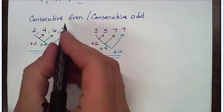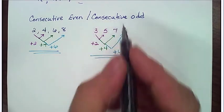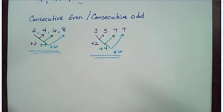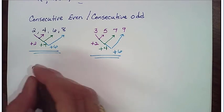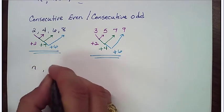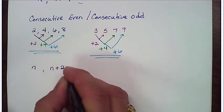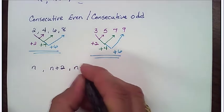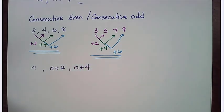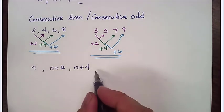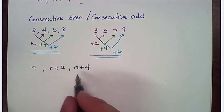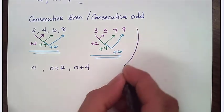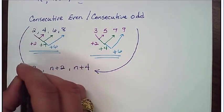Is that no matter if I'm dealing with even or odd, either way, I'm going to use the same formula. And that formula is going to be n for the first number, n plus 2 for the second number, n plus 4 for the third number, and so on and so forth. If I were to go 4, it would be n plus 6, n plus 8. And that works for either consecutive odd or consecutive even.